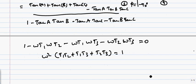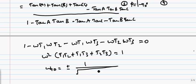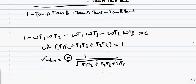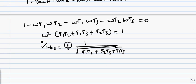From the denominator condition, we get ω²(t1t2 + t1t3 + t2t3) = 1, so ω₉₀ = 1 / √(t1t2 + t2t3 + t1t3). We take only the positive value since ω varies from 0 to infinity.